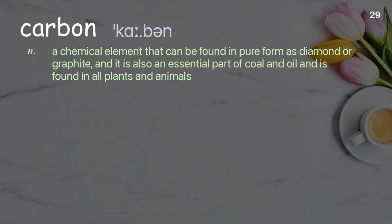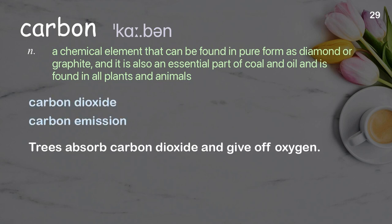Carbon: a chemical element that can be found in pure form as diamond or graphite, and is also an essential part of coal and oil, found in all plants and animals. Examples: carbon dioxide, carbon emission. Trees absorb carbon dioxide and give off oxygen.